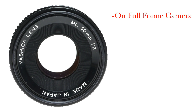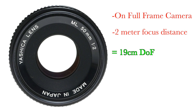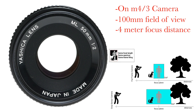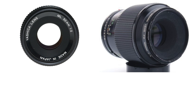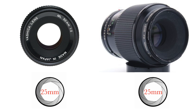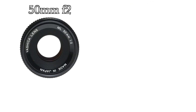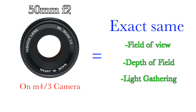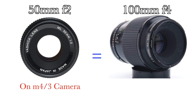So if we have a 50mm f2 lens on a full-frame camera focusing on a subject 2 meters away, this results in a 19cm depth of field. A 50mm f2 lens on a micro four-thirds camera, though, would result in a field of view equivalent to 100mm, which would require the same 4 meter focus distance as a 100mm lens, and would result in the same 38cm depth of field. Since a 50mm f2 lens and a 100mm f4 lens both have a 25mm maximum aperture opening, they let in the same amount of light, regardless of sensor size. Put simply, a 50mm f2 lens used on a micro four-thirds camera will result in the exact same field of view, depth of field, and light gathering capabilities as a 100mm f4 lens used on a full-frame camera.